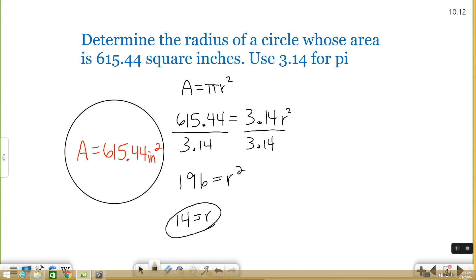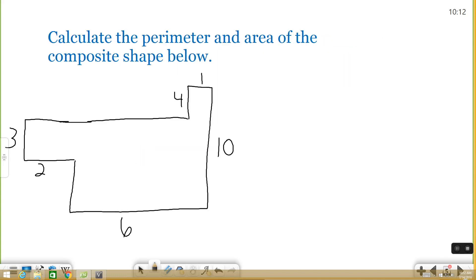All right, so let's try one more example. This one with a different shape. This example says calculate the perimeter and area of the composite shape below. A composite shape is basically one like this. It's one that's not your normal rectangle, triangle, square, etc.